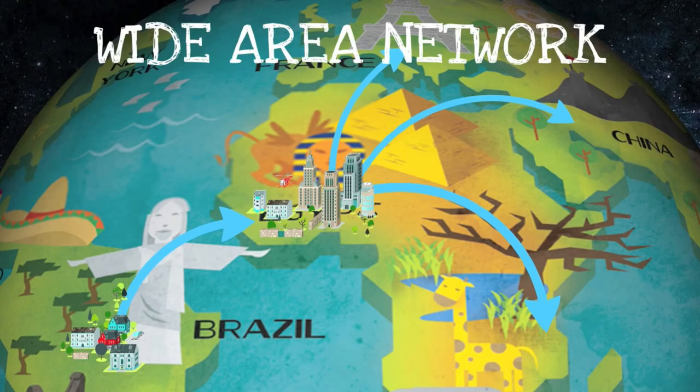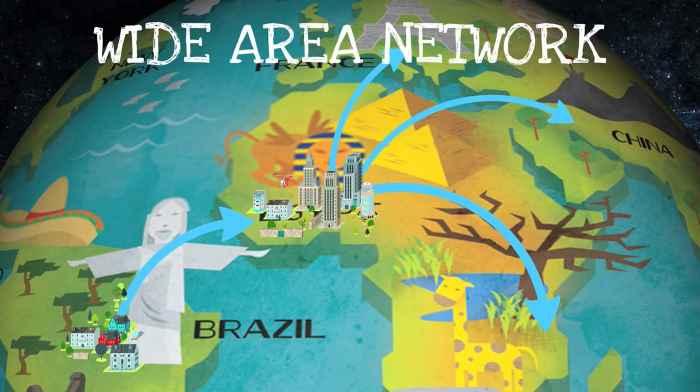Business and government entities utilise WANs to relay data among employees. This is called a virtual private network or VPN. WANs require many different types of hardware devices and transmission media, but perhaps the most important devices are the modems. The modem allows you to connect to networks outside of your LAN. The router is also very important as it makes the translation and passing of data packets possible across the WAN.